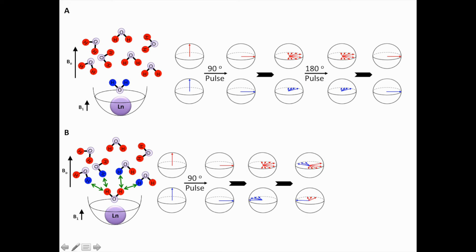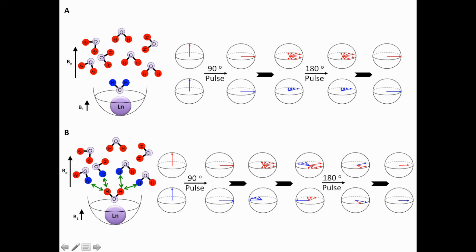Exchange of water molecules causes exchange of protons that are resonating in different phases, so they can cancel each other. Refocusing of all these magnetization vectors yields a net magnetization which is less than what we expected to see in the absence of exchangeable protons. This mechanism was discovered long ago, and recently researchers have started designing new contrast agents based on this mechanism.